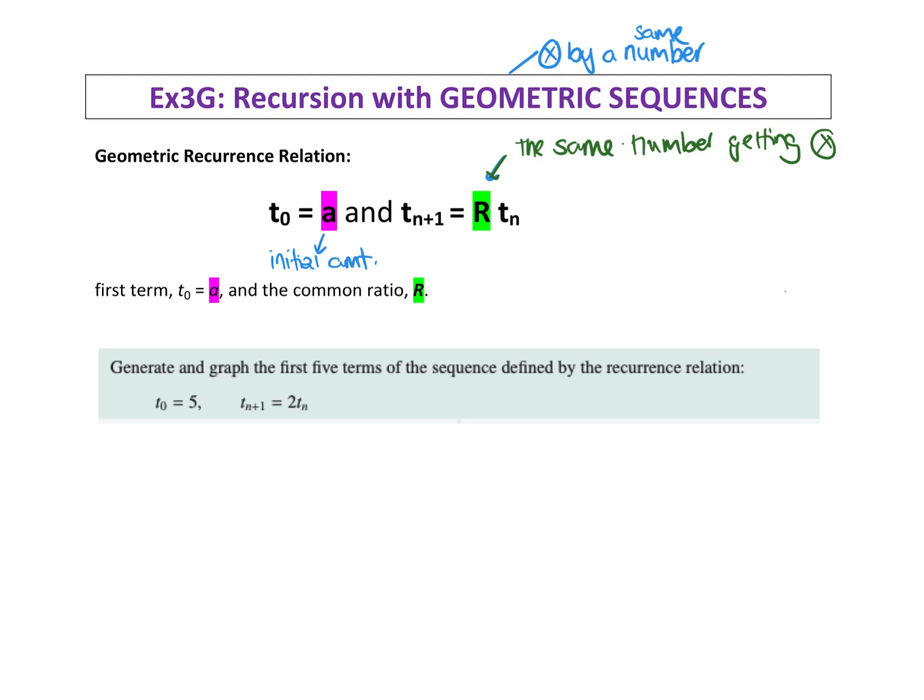Here it says generate and graph the first five terms of the sequence defined by this recurrence relation. Remember, this is very important: if they're asking you to use the recurrence relation, when you show your working out, you must show the working. Year 12s won't get the mark otherwise, and it's an easy mark, so don't miss out.